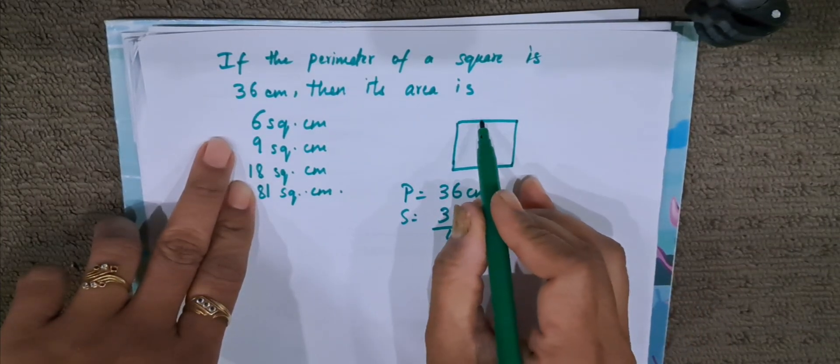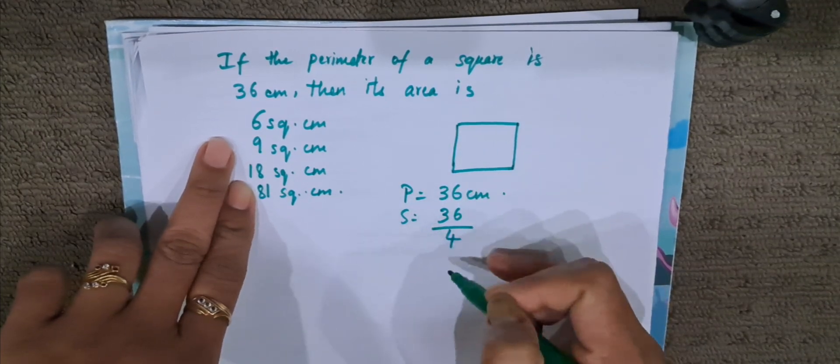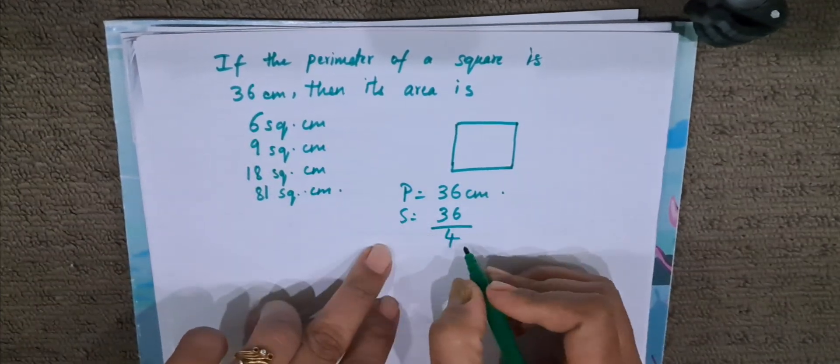So if we take this as x, x plus x plus x plus x, 4x will be 36. So x will be 36 by 4. So side is 36 by 4.